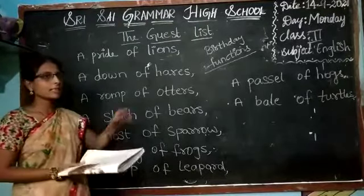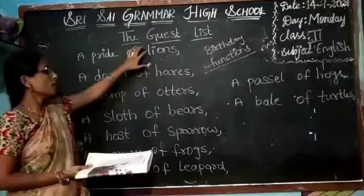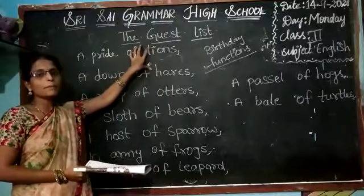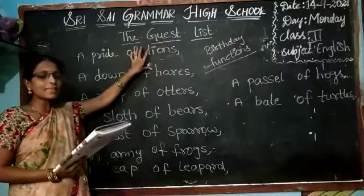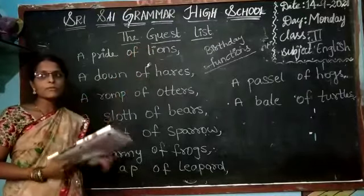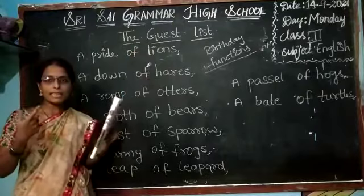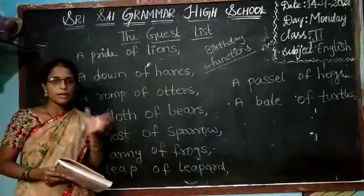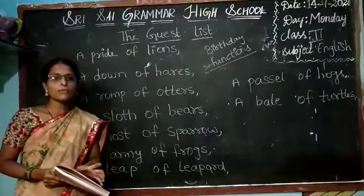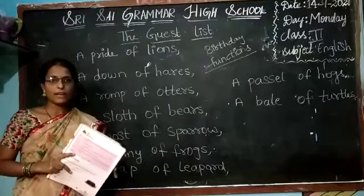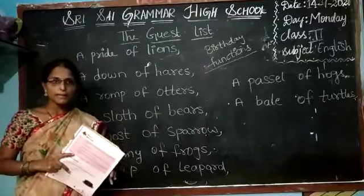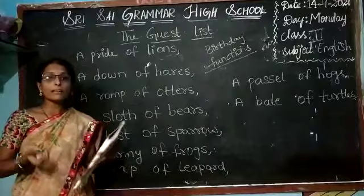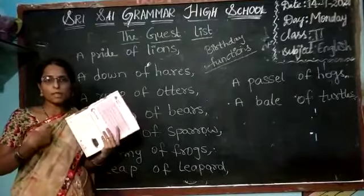Today we are entering the second poem. In that we have the poem — the Guest List. The guest list means if we are celebrating any function, like a birthday party, we call relatives, friends, and neighbours. So we should make the list of how many members we are calling.